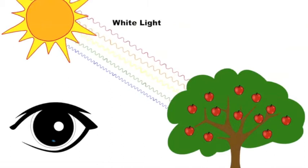Light comes from the sun and most of the colour waves get absorbed into the tree, except for the green colour waves which bounce off the tree and go into your eyes. This is why the tree looks green.